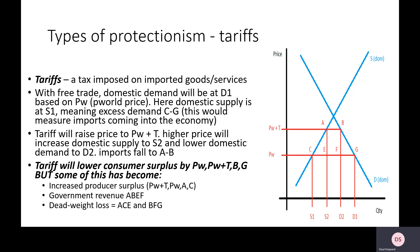Going from a closed economy to free trade, the massive winner is the consumer — they can access more goods and services at a much lower price. But it's bad for domestic firms because the lower price means some firms close down, which is really bad for domestic jobs. So rather than banning imports, we place a tariff on them, which raises price from Pw all the way to Pw plus T — price world plus tariffs.